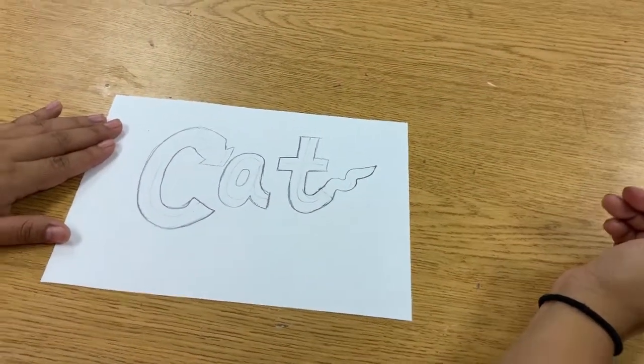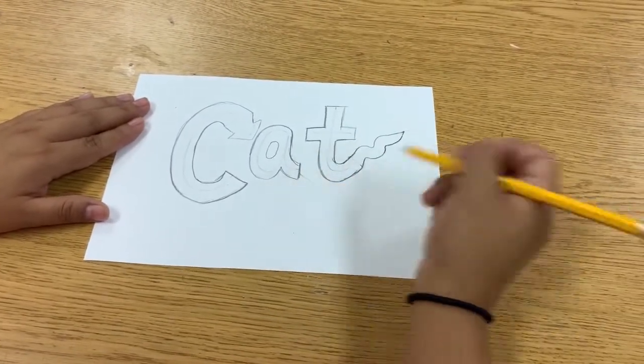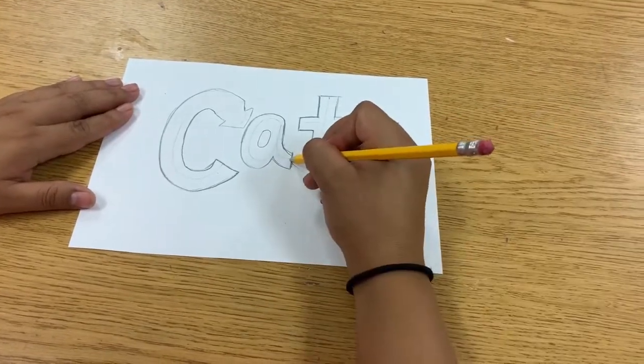Now, another cool thing you can do is with this tail of the A, I can bring it to where it comes down underneath the T and up around. So all I have to do is the same thing.